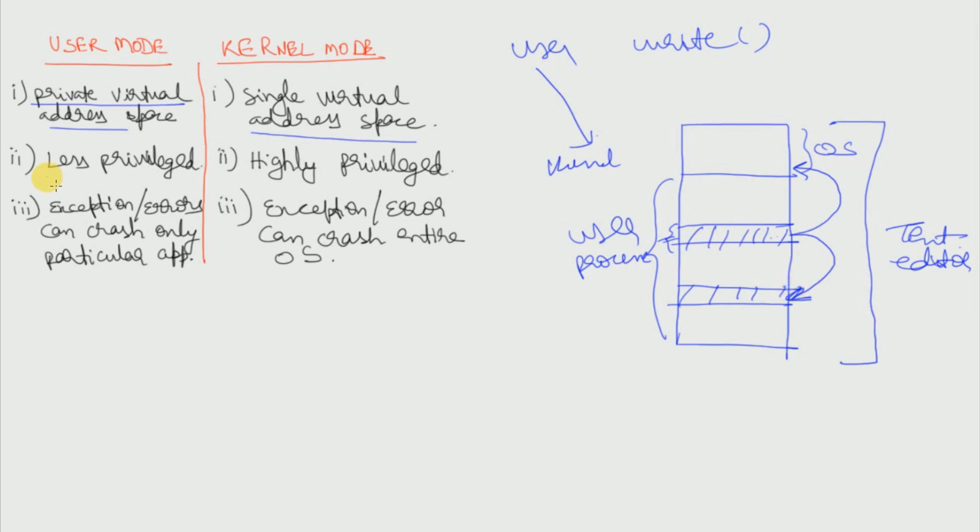Now the second difference is user mode processes are less privileged while the kernel mode processes are highly privileged. So you can see here that the user mode processes cannot directly interact with the hardware.